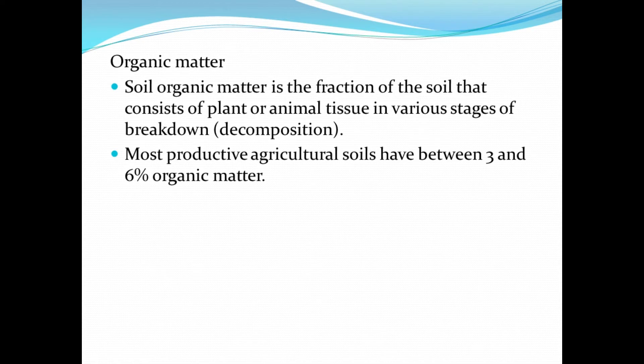Most productive agricultural soils have between three to six percent organic matter. However, the quantity of organic matter in the soil varies depending on where the soil is located. A soil found in a desert will have very little organic matter, whilst a soil found in tropical rainforests or in areas where there is a lot of rainfall will have more organic matter — probably even 10 percent or maybe 15 percent.